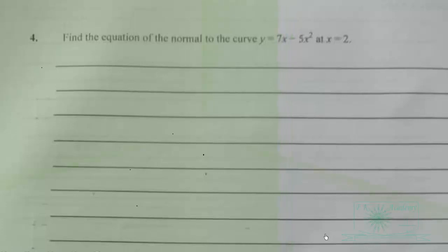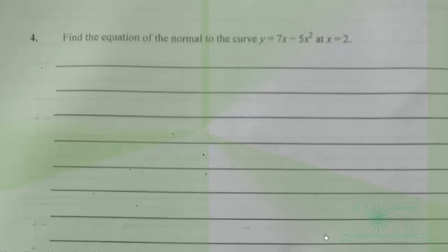This is the major 2024 elective mathematics paper 2, question number 4. We have to find the equation of the normal to the curve y equals 7x minus 5x squared at x equal to 2.